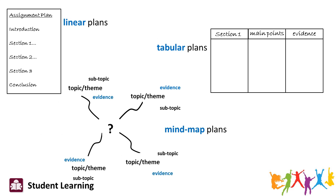Here are a few examples of the kinds of approaches people take. In the linear plan example, we've got sections and subsections, and then details written underneath each one. In the tabular plan example, we've got different columns, and the columns are titled to help make sure that you articulate what the main points are going to be for each section, and crucially what the evidence is going to be too.